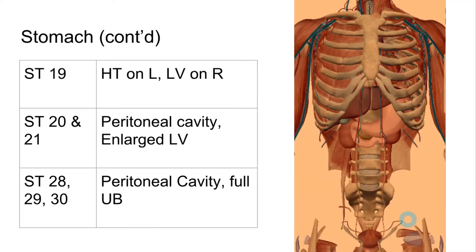Stomach 19, 20, 21, and 28 through 30. Stomach 19 is 2 cun lateral to the midline, 6 cun superior to the umbilicus, level with REN14. The heart can be penetrated if enlarged on the left, and the liver if enlarged on the right. Stomach 20 is 2 cun lateral to the midline, 5 cun superior to the umbilicus, level with REN13 — deep penetration can penetrate an enlarged liver. Stomach 21, Liangmen or Beam Gate, is similar — deep needling on the right side may also penetrate an enlarged liver.